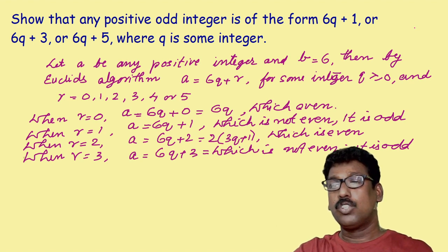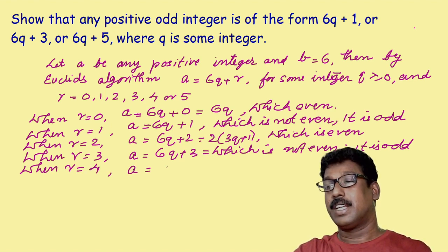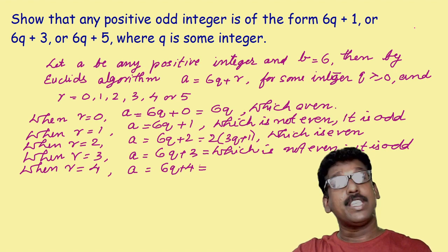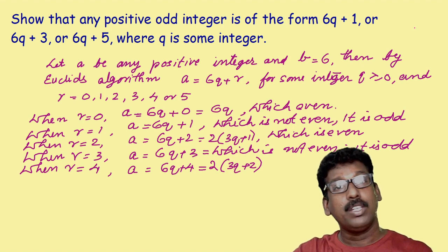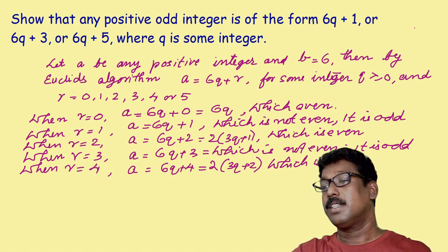Now, what about when r is equal to 4? You can write a is equal to 6q plus 4. Again, you can take 2 as common, that is 2 into (3q plus 2). That means it is a multiple of 2, so we can write: which is even.